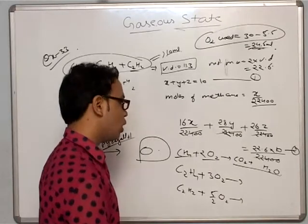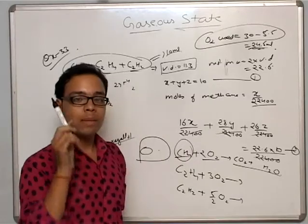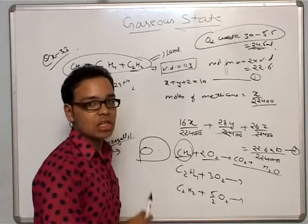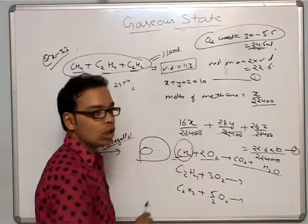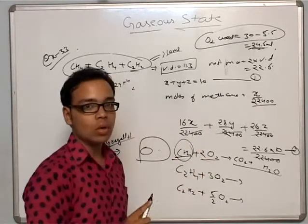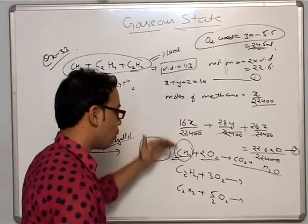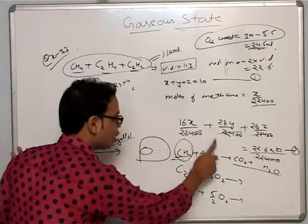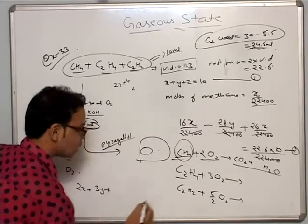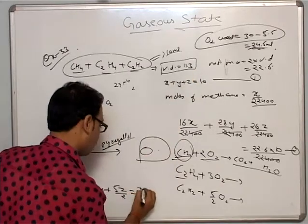This is why we use gas law — Eudiometry. If the same number of molecules, the same number of moles represents the same volume at the same temperature and pressure. So if mole ratio is 1:2, volume ratio is also 1:2. Applying Eudiometry: x/2 O2 for CH4, plus 3y/2 for C2H4, plus 5z/2 for C2H2 equals total O2 consumption of 24.5 ml. This is our third equation.